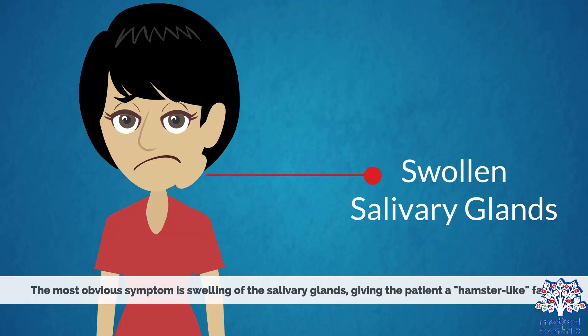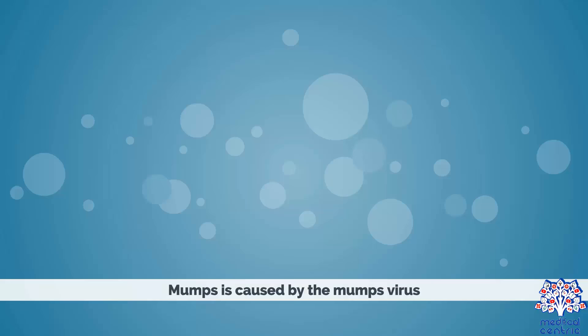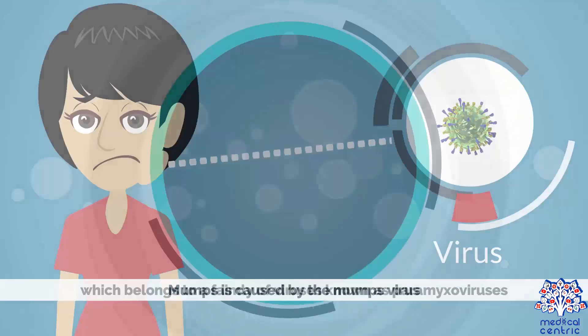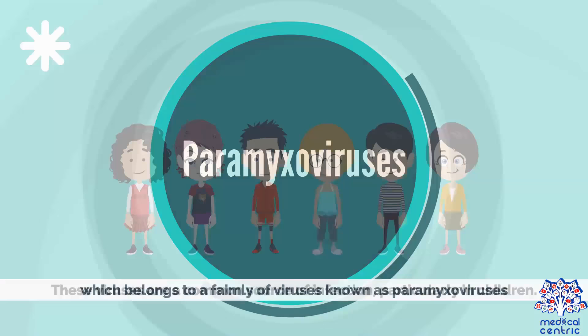Causes. Mumps is caused by the mumps virus, which belongs to a family of viruses known as paramyxoviruses. These viruses are a common source of infection, particularly in children.